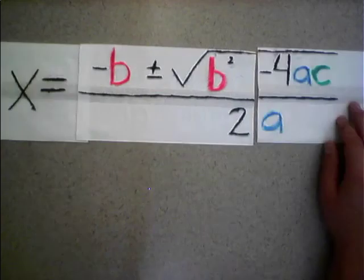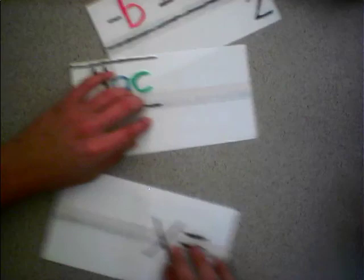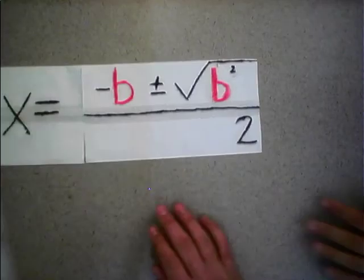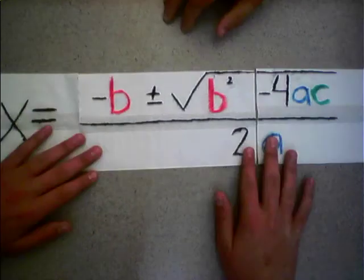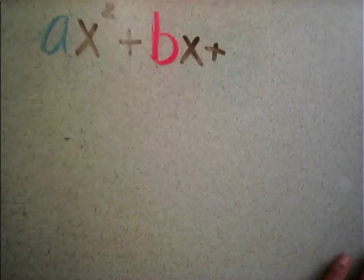The quadratic formula by Josh Stein. x equals opposite of b plus minus square root b squared minus 4ac all over 2a. That is the quadratic formula, ladies and gentlemen.